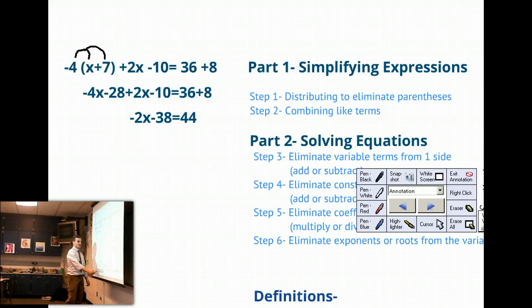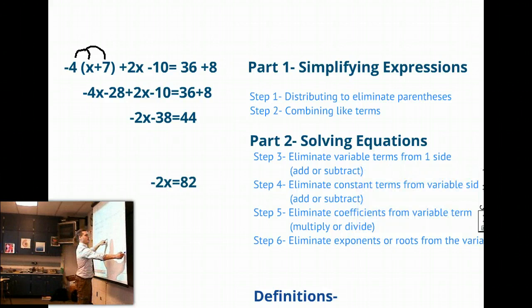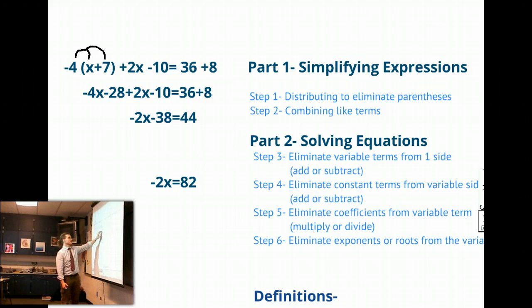If we look at our next step, we do not have any variable terms on the opposite side. We would only need to use step 3 if we had variable terms on both sides. Since one side is just 44, a constant, we do not need to eliminate the variable terms from one of the sides. We only have it on one side.